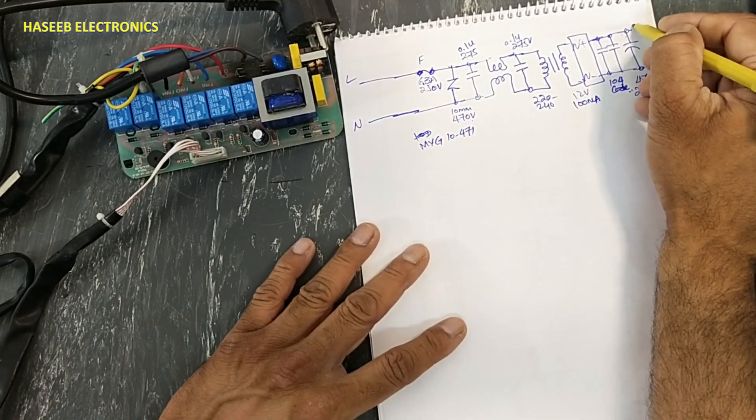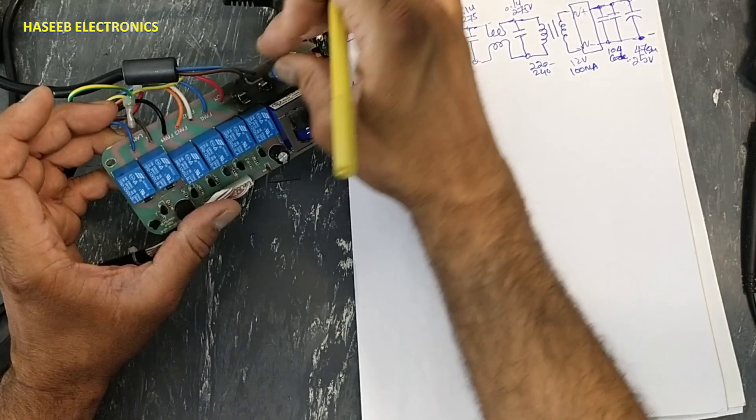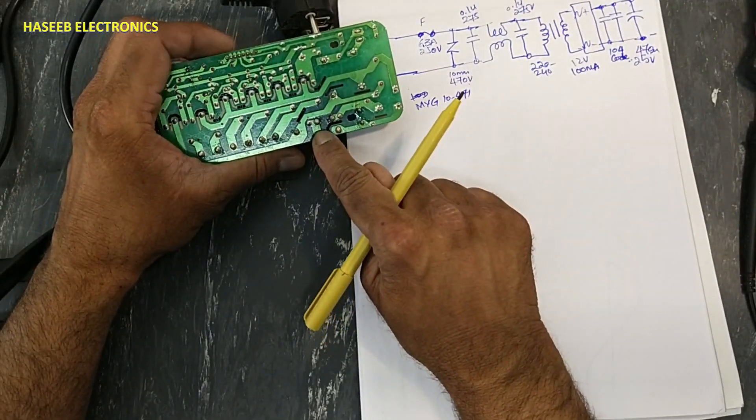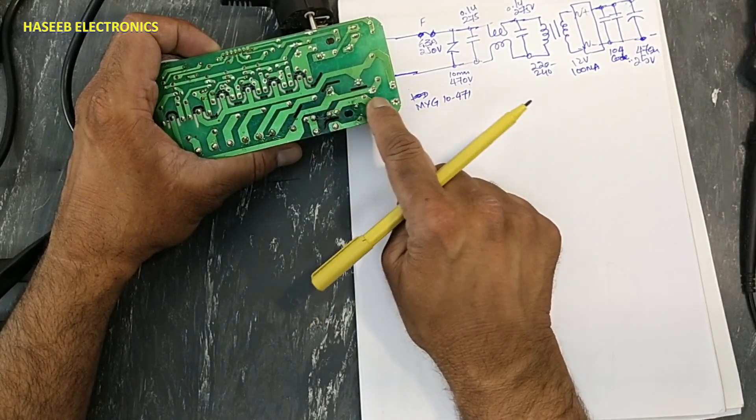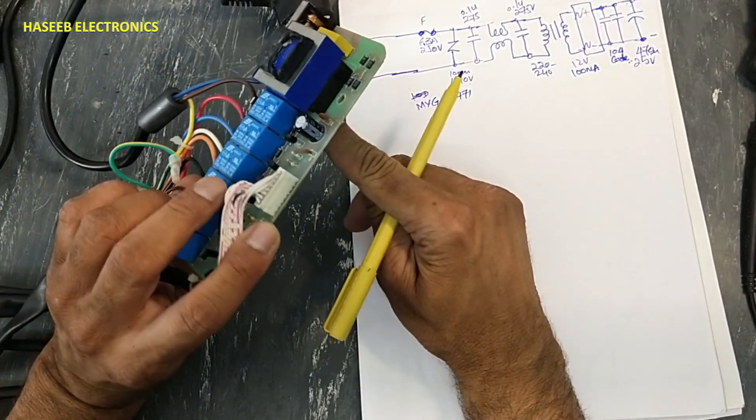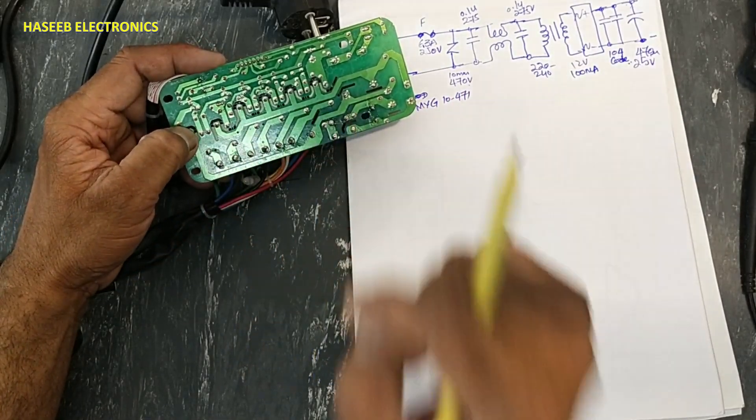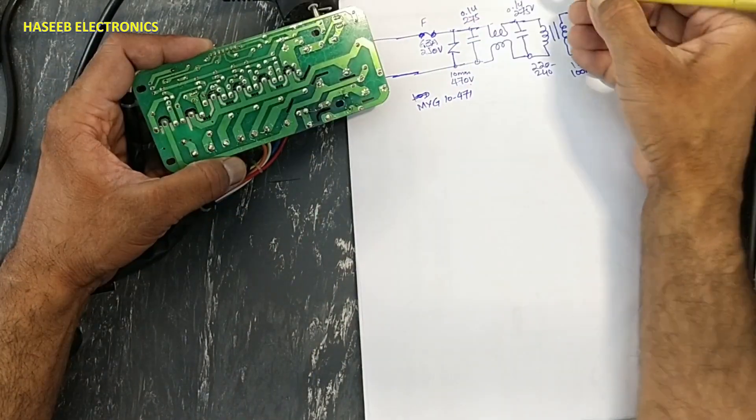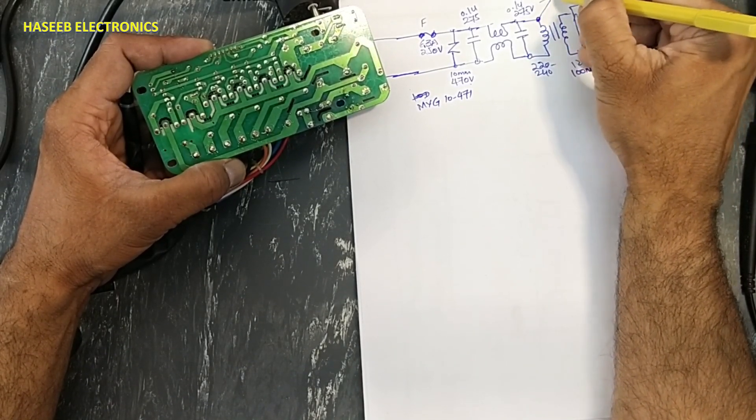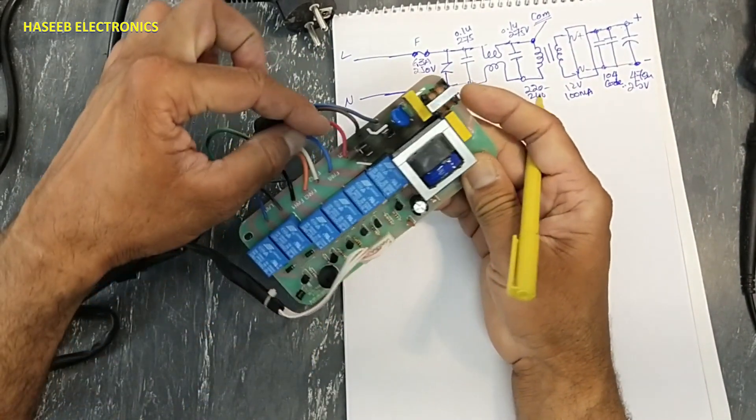These are ceramic capacitors. Then it has a polarized capacitor, 470 microfarad, 25 volt. And this is a 104 code ceramic capacitor. Here we have positive voltage. This line is ground. From here until here, the circuit is completed. If we check here, fused voltages are reaching here, then these are provided to this point, that is the transformer, and then it is reaching to one relay.